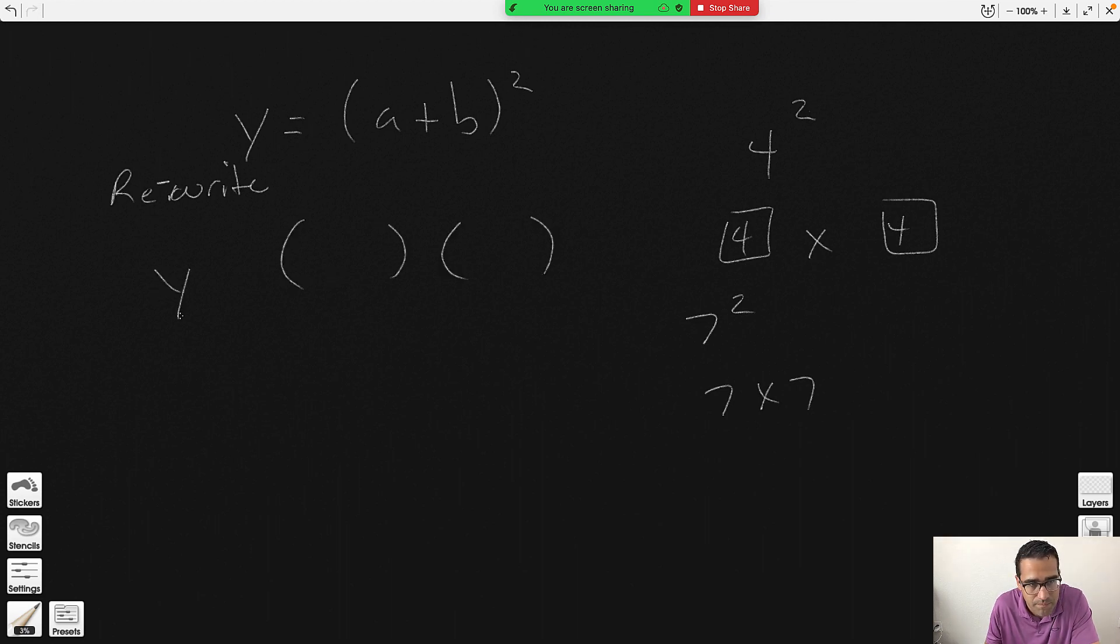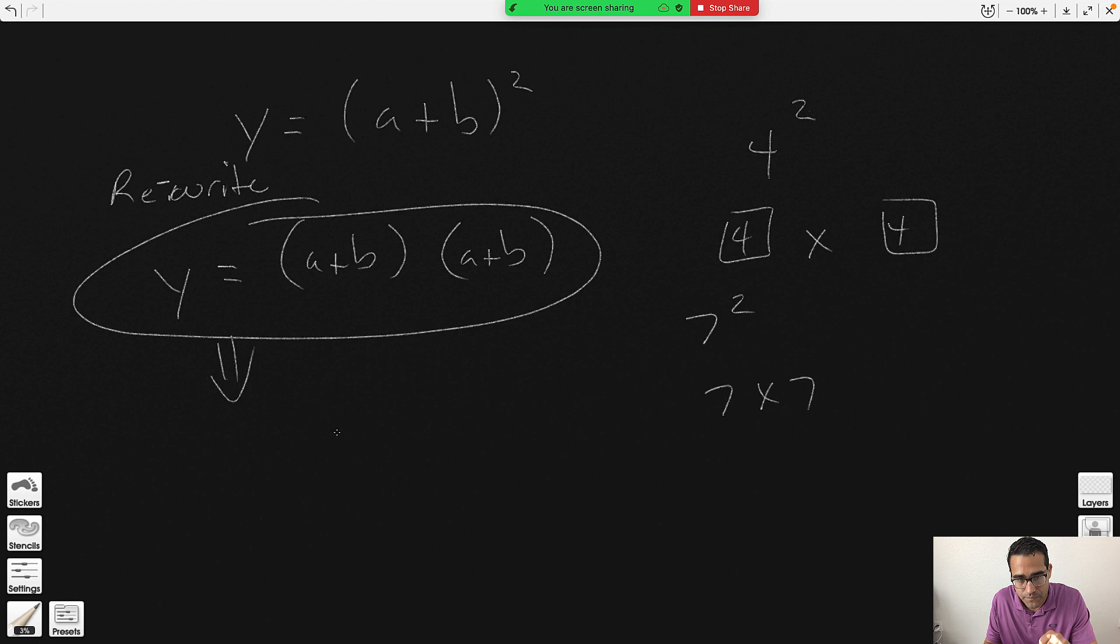Now it looks something more normal that we have seen, called this distributive property. So the next step, what would it be? Apply this distributive property. And then I'm not going to give any more hints. So five seconds, this is where you should start. You're going to rewrite it into that.